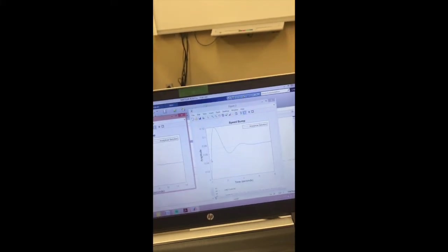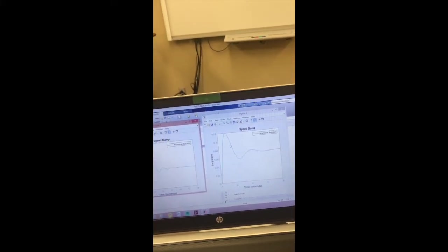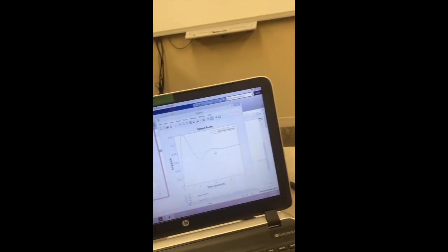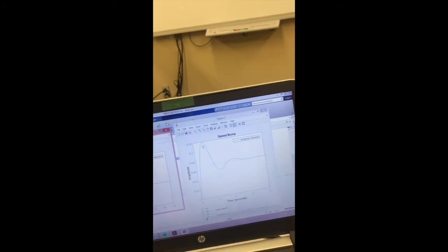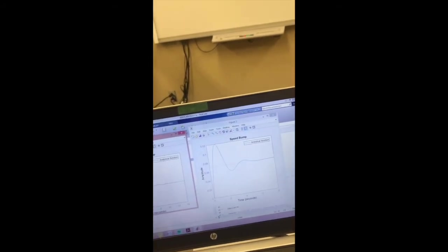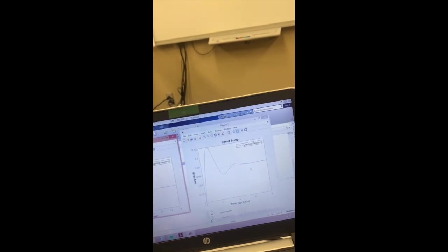Based on these graphs, it's safe to assume that going over a speed bump slowly would be the best route, because there are fewer oscillations. Even though there's one peak 0.1 higher than the 155, it takes less time to settle.